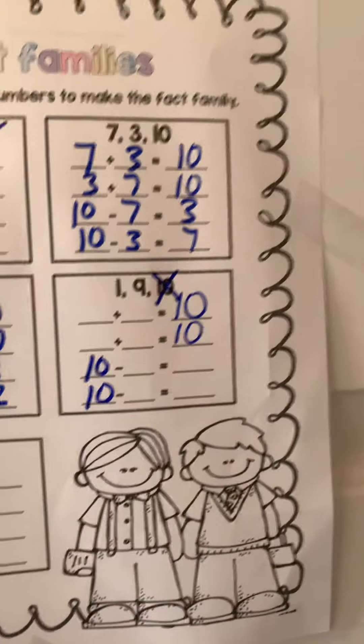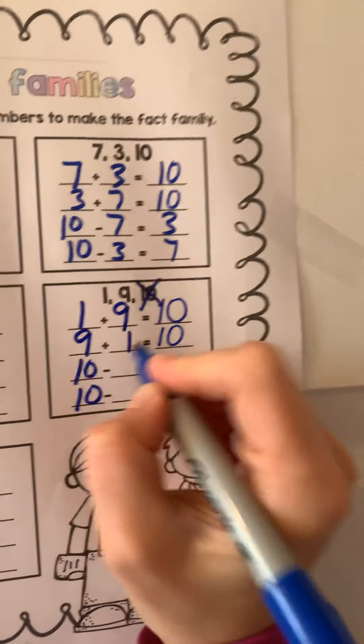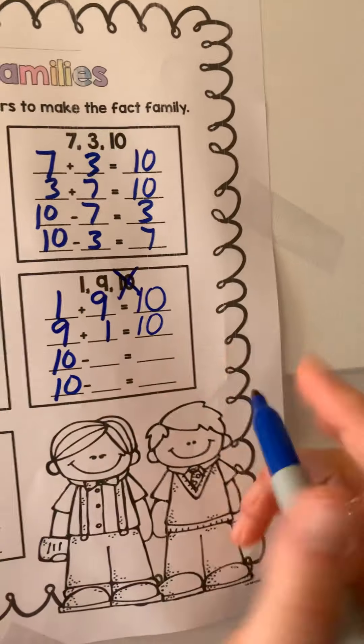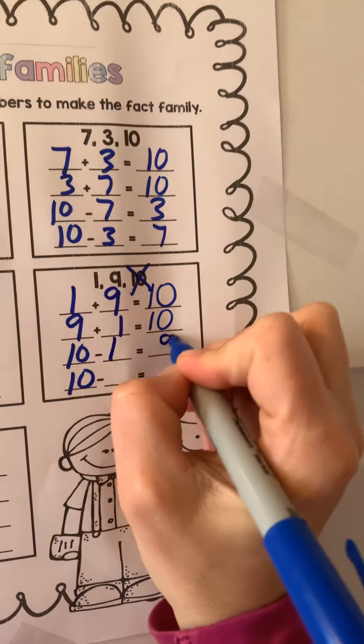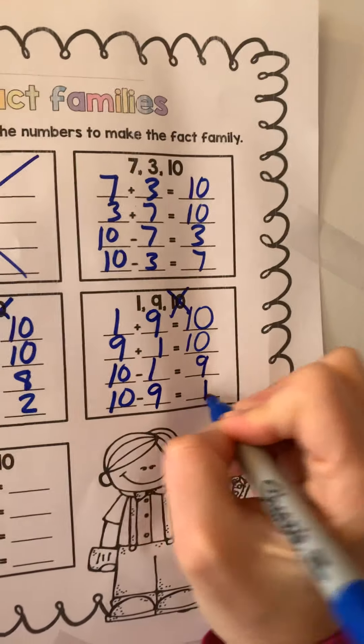Cross it out. So we have 1 and 9 left. Ready? 1 plus 9 is 10. Flip it. 9 plus 1 is 10. And then we have to use them down here, too. 10 minus 1 is 9. Flip it. 10 minus 9 is 1. Good job.